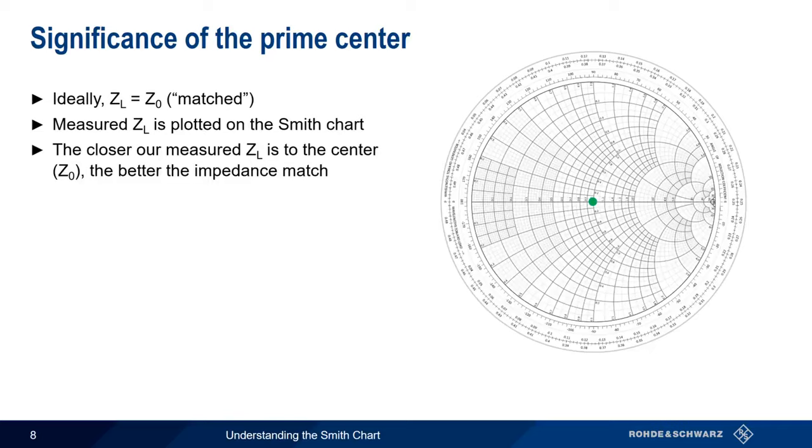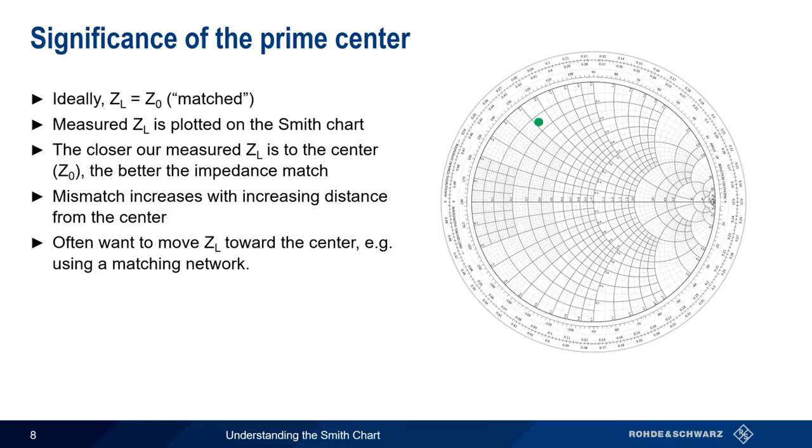The farther away our measured value is from the center, the higher the degree of mismatch. A common goal in impedance matching, therefore, is to find a way of moving Z sub L as close to the center as possible.